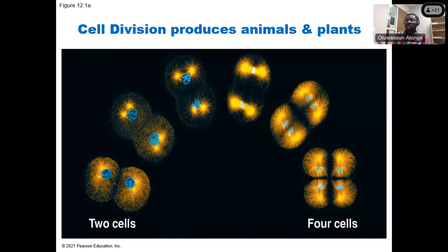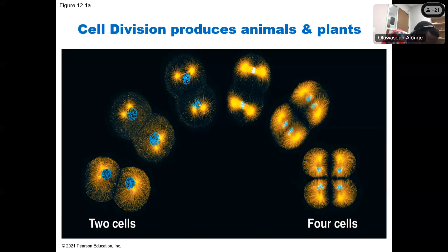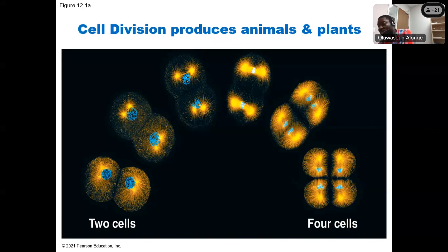Another word I use to describe mitosis is nuclear multiplication — the nucleus multiplying. So instead of one nucleus, it increases to two; two increases to four; four to eight; eight becomes sixteen; sixteen becomes thirty-two. It will keep splitting and increasing in number.